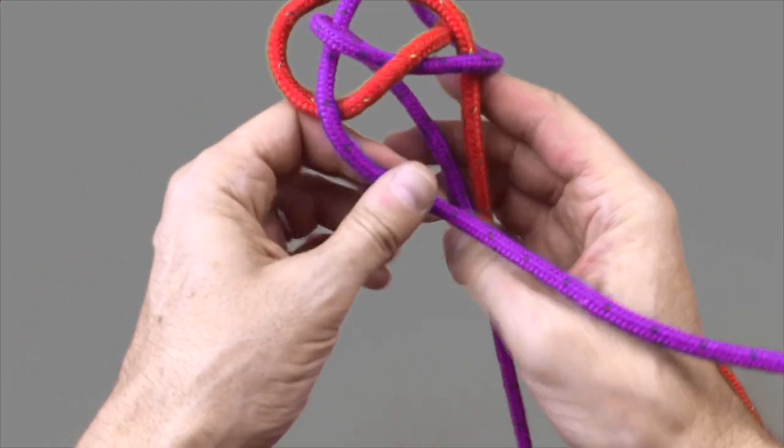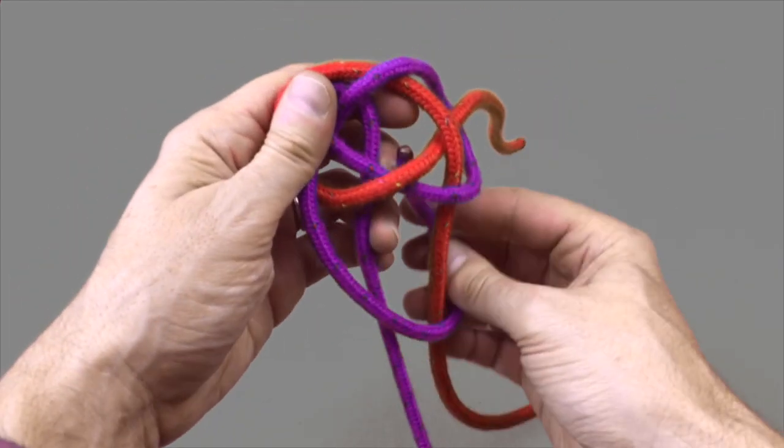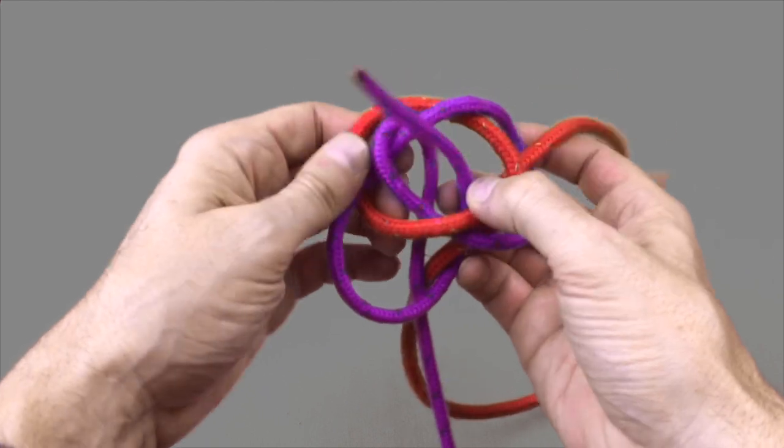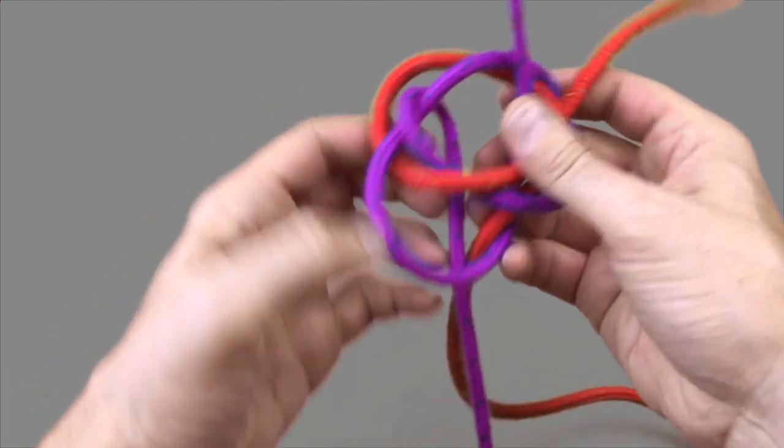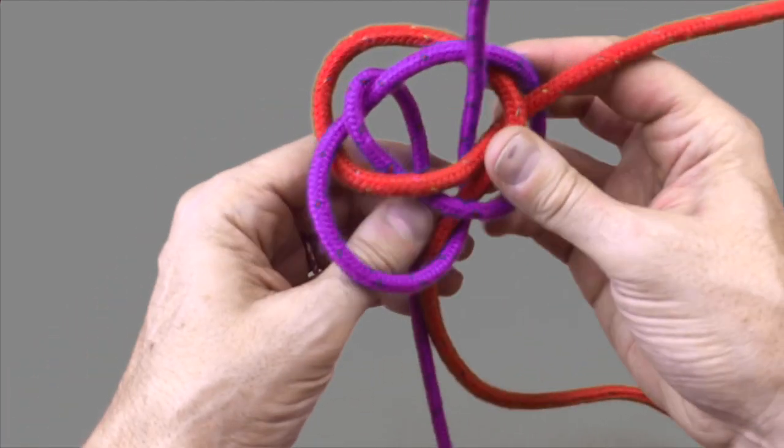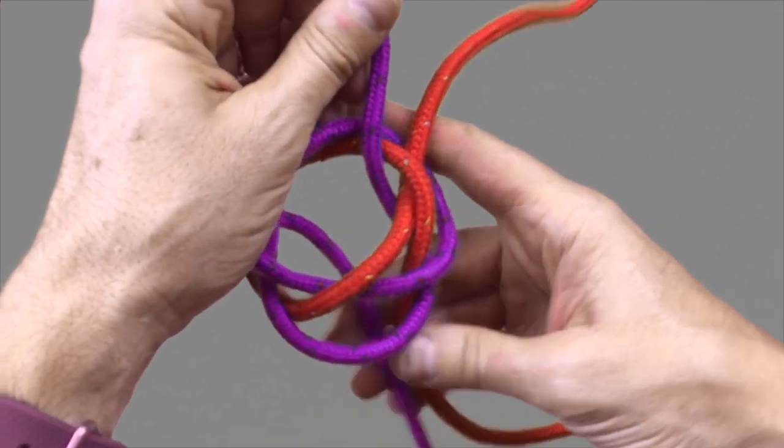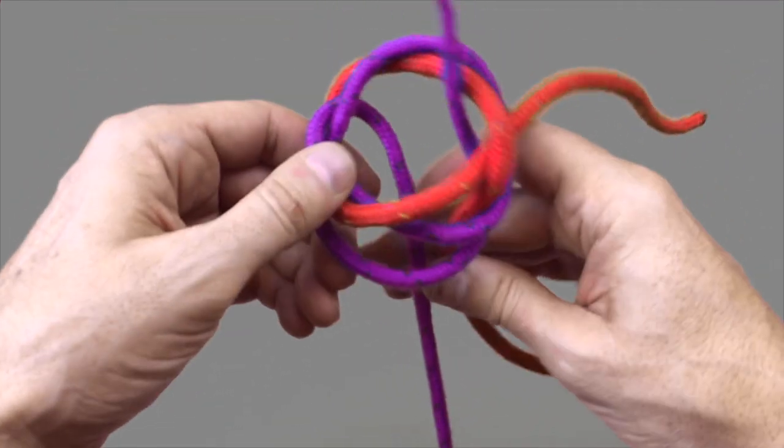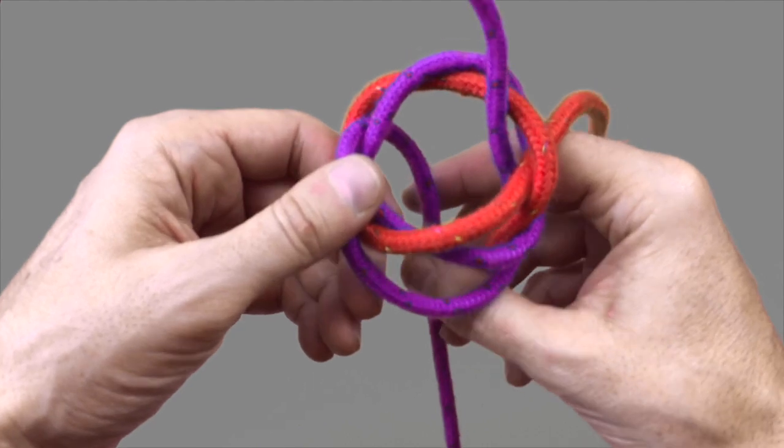Take the purple cord around the front anti-clockwise and then up through the central hole in the middle of the knot. Pulling it through and start to develop the cords into a ball.